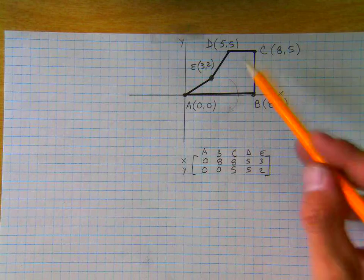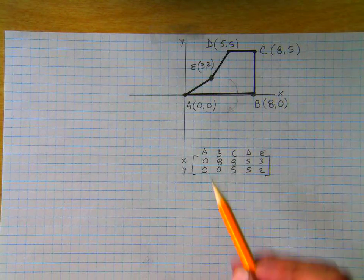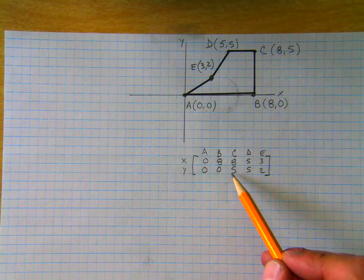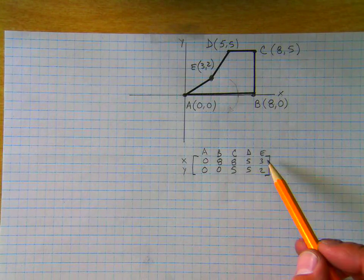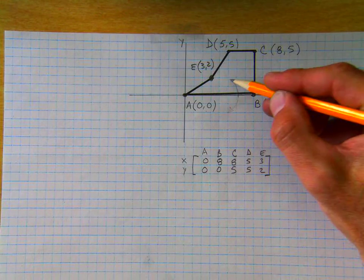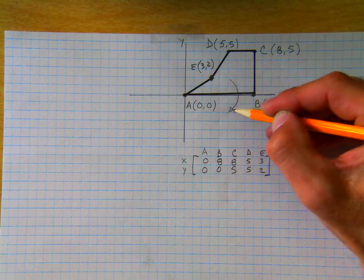Each of these coordinates and this figure can be represented in a 2 by 5 matrix where the rows represent the X's and Y's and the columns represent each point. And what we're going to do in this lesson is take this figure and reflect it over the X-axis.